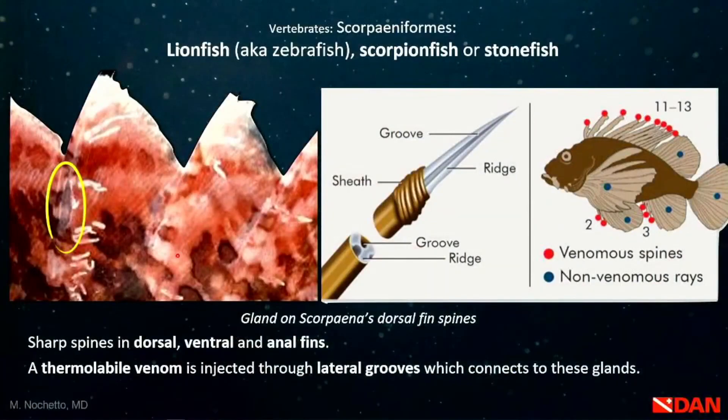This is a picture of the dorsal fin of a scorpioniform. The semi-transparent area is where venom accumulates. Looking at the spine structure in this animation, we see a very dense cartilage with two grooves on each side that connect to the venom sac. Importantly, there is no active mechanism of injecting venom — when the spine embeds in your skin, your squeezed tissues compress the gland and the venom gets injected.